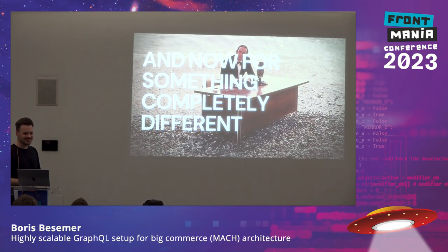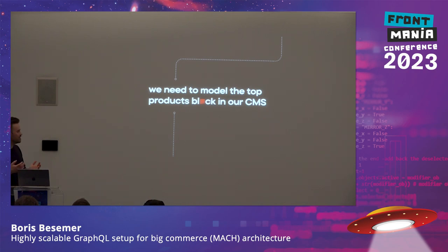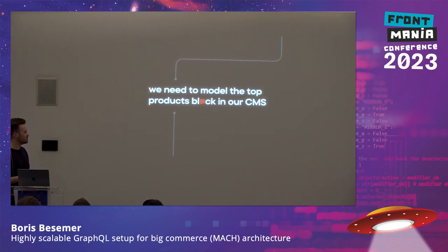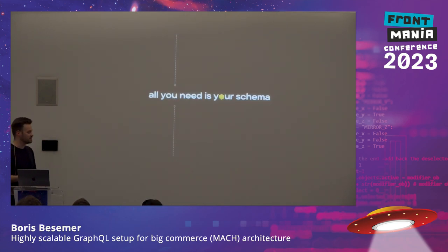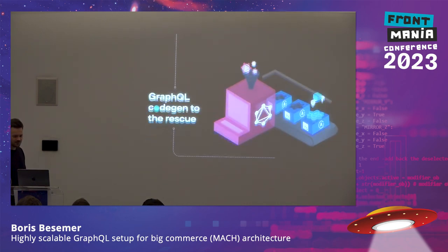Now for something completely different — let's drop the entity story. We've got our one query in our component. There's still another part: trying to get this top products block working by modeling it in our CMS. We have our headless SaaS CMS somewhere, and we need to set up the complete model of a top products block — make sure we have the title and the IDs. You could go to their UI and click something together, or use their API and upload some JSON. But there's always the possibility of that CMS having a different model than your schema. So all you actually need is your schema to build this. We use our schema to define what the CMS needs to know, and we do it with GraphQL code gen.